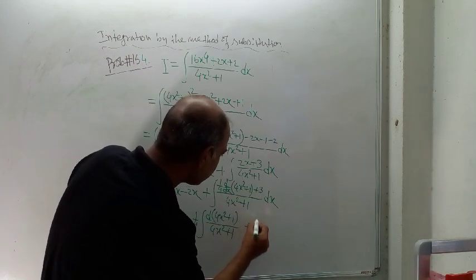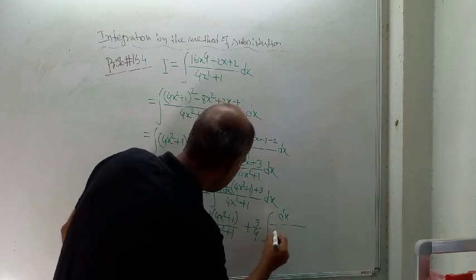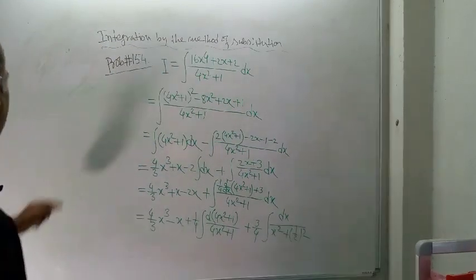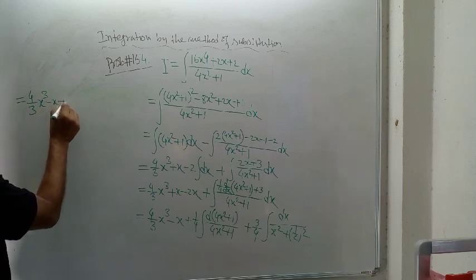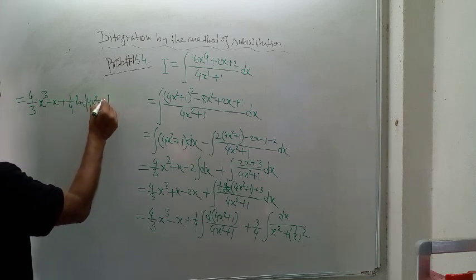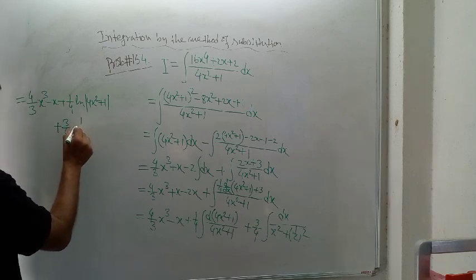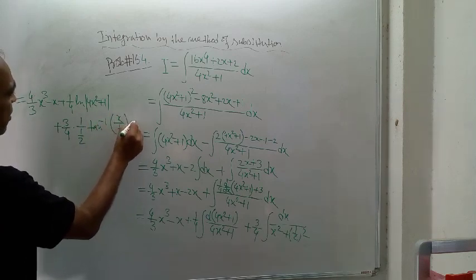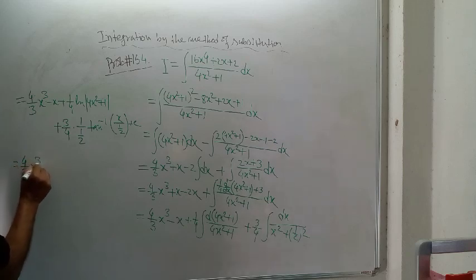So for this you write this way: 3/4. Then the integration sign dx over (x² + 1/2) whole square. So the next line is: 4/3 x³ minus x plus 1/4 log(4x² + 1), then plus 3/4 times 1/8. So the next line is the final line, and that will be the answer to the given problem.